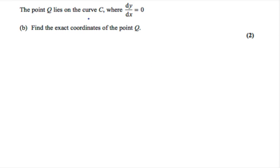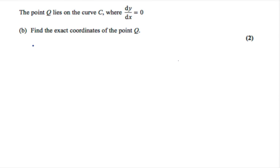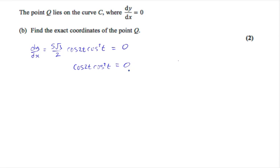The point Q lies on curve C where dy/dx equals 0. Part B says: find the exact coordinates of the point Q. From part A, we found that dy/dx is equal to 5 root 3 over 2 cos 2t cos squared t. Setting this equal to 0, we divide both sides by 5 root 3 over 2 to get rid of it. We need to remember that t is between 0 and pi over 2, which means 2t is between 0 and pi.